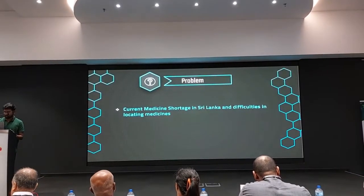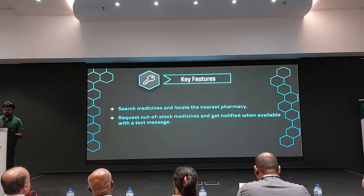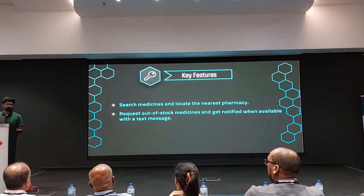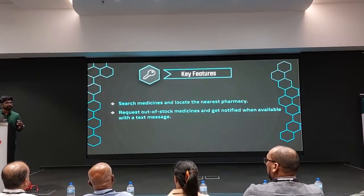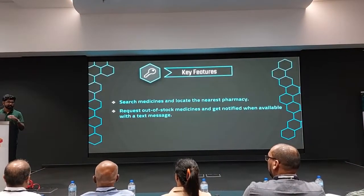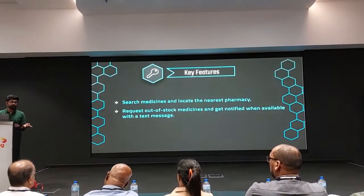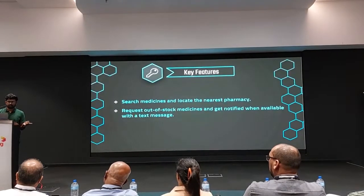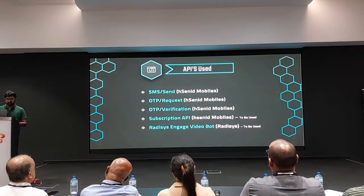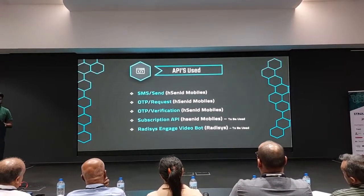For this problem, we came up with the idea of the Big Mac mobile application. This app lets you search for medicines and you can locate the nearest pharmacy if a medicine is available right now. If it is not available at the moment, your order is saved as a reservation, and when the medicine becomes available, you will be notified by SMS. We have used SMS and notification APIs in our system.